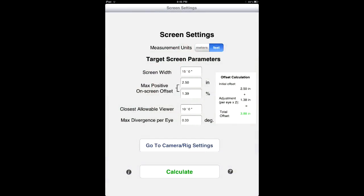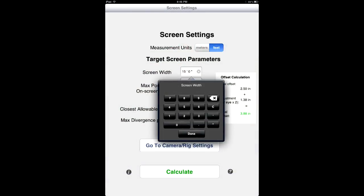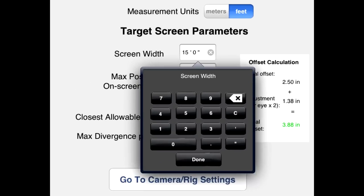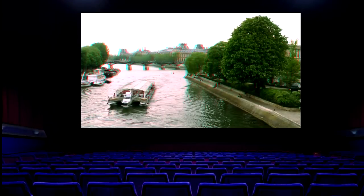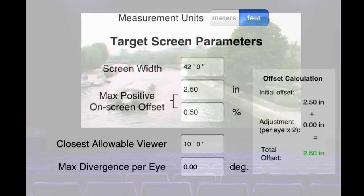To change the screen width value, all you have to do is tap on the screen width entry field, and then enter the value you want using the numeric keypad that appears. Obviously, you would enter whatever value your project needs, but we'll stick with 42 feet for this video session. That's equal to about 13 meters, and that's a typically large cinema screen.